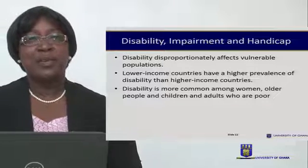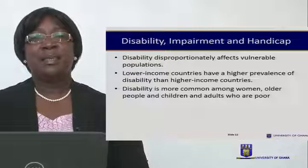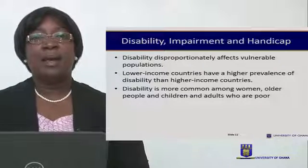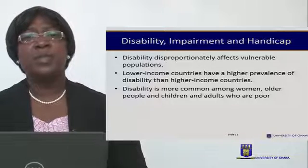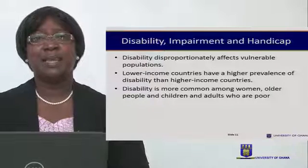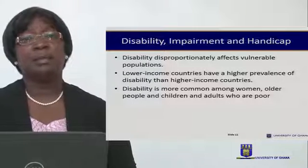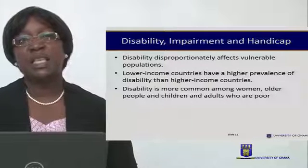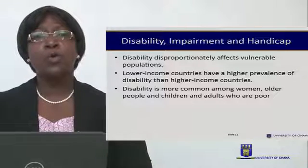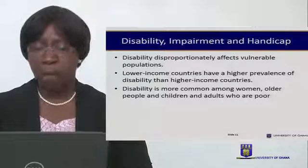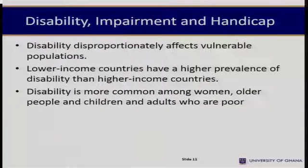Disability is found in vulnerable populations. Lower-income countries have a higher prevalence of disability than higher-income countries. Disability is also more common among women, older people, and children and adults who are poor — so it appears that disability and poverty have clear links.